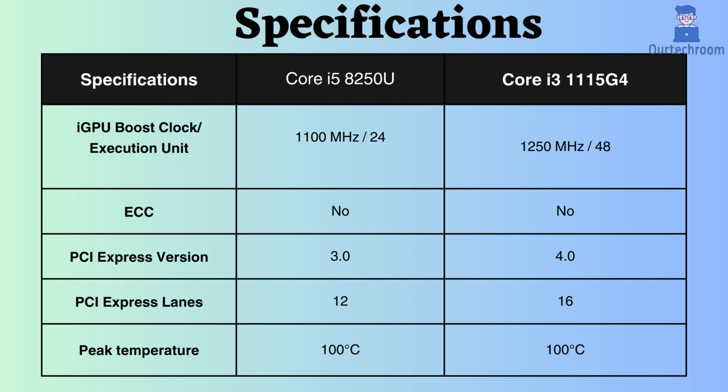Both processors do not support ECC. Therefore, neither of them is suitable for critical systems such as workstations and servers. Additionally, the Core i3 supports PCI version 4, while the Core i5 supports only PCI version 3. Furthermore, the number of PCI lanes supported by the Core i3 is greater than that of the Core i5.